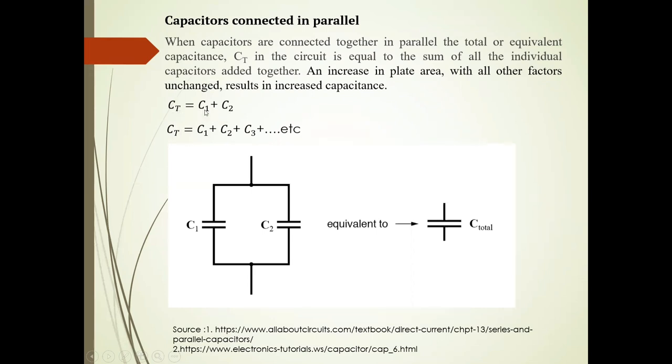Ct equals C1 plus C2 for this diagram. If there are more capacitors, Ct is given by C1 + C2 + C3 + ..., which is equivalent to C total.